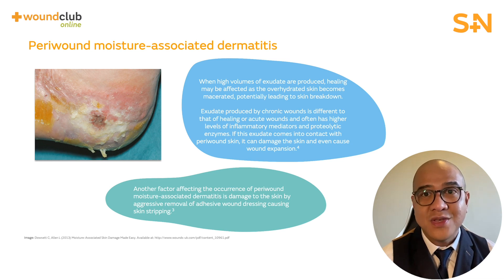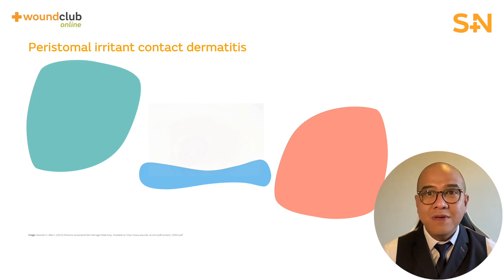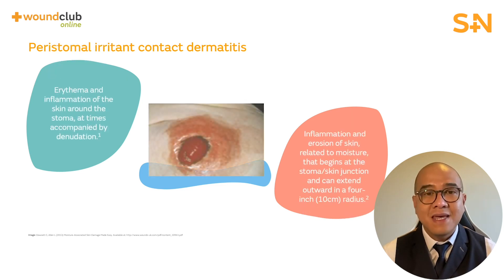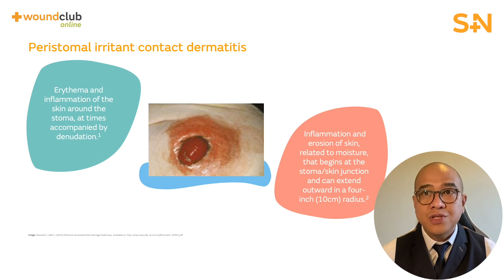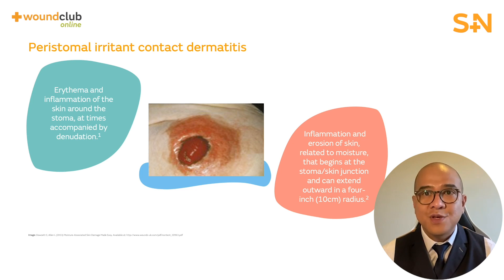Another factor that may affect the occurrence of this type of skin damage is the aggressive removal of adhesive wound dressings causing skin stripping. Therefore, take extra care when removing wound dressings with strong adhesives. The last type of MASD is peristomal irritant contact dermatitis, which can occur as a result of a poor seal around the stoma or pouch, allowing stool or urine to collect under the device and cause detrimental damage to the skin.